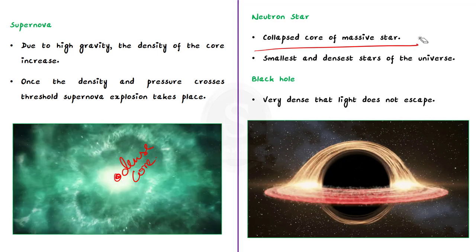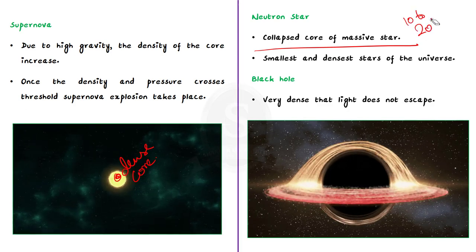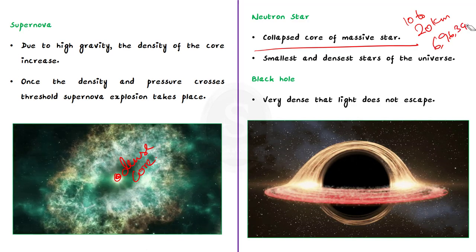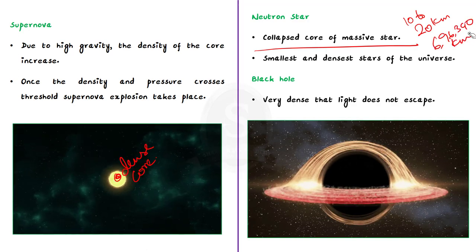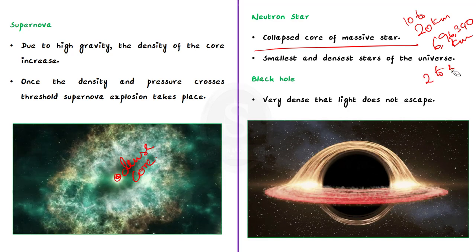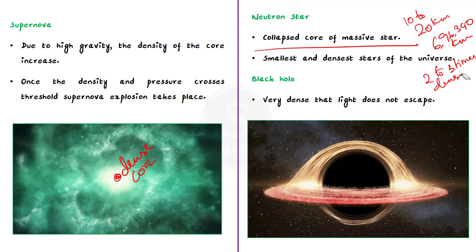Neutron stars are the smallest and densest stars known to exist. Their radius is only around 10 to 20 kilometers. Compare this to our sun, whose radius is 696,340 kilometers. But even though neutron stars are very small, they weigh 2 to 3 times more than our sun. This is why they are called the densest stars of our universe.